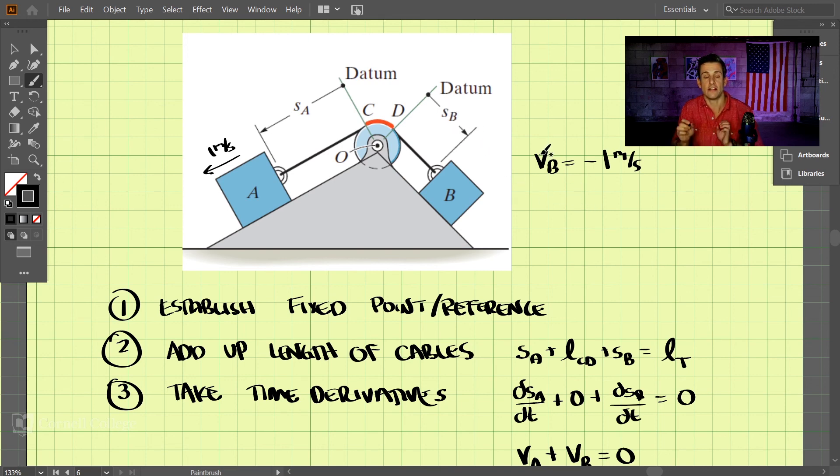So that is a simple example of dependent motion. And you could probably already tell this by the way it's connected. But now we'll go through a more complex example.